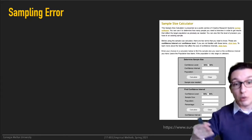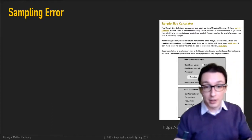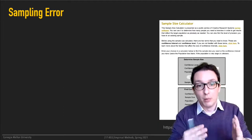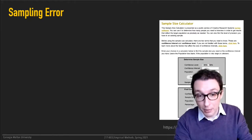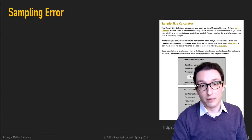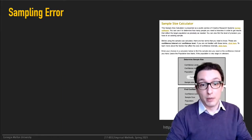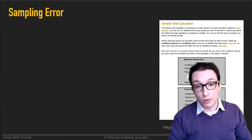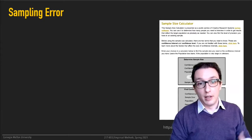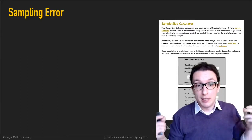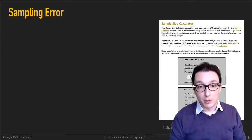Ideal design: set the confidence level and margin of error ahead of time, then sample as many people as needed to reach that. If you can't afford that for whatever reason, it's still useful to plug the actual sample size into a sample size calculator — the first hit on Google — to reverse engineer what the margin of error is, so you can report that in your write-up and reason about how generalizable your measurements are.